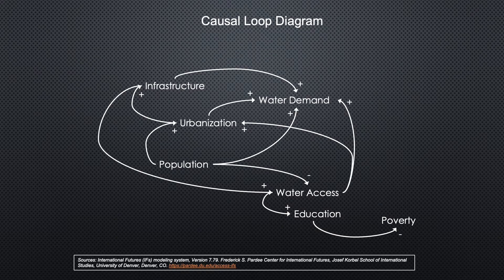A causal loop diagram is a tool that we use to understand complex systems and how components interact. Using the IFS model to evaluate the trends in Ghana, we see the following system at work. The causal loop diagram illustrates the reinforcing nature of population growth, urbanization, and infrastructure development to increase water access. It also demonstrates how the increase in population decreases water access per capita and requires the government to invest more in urban infrastructure.